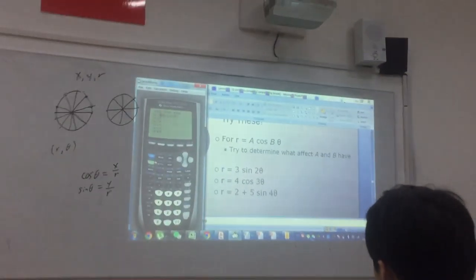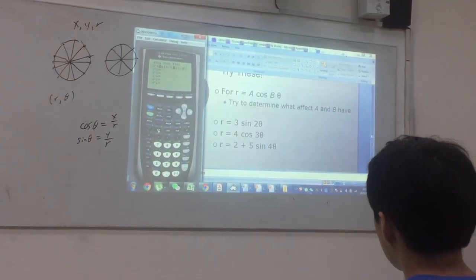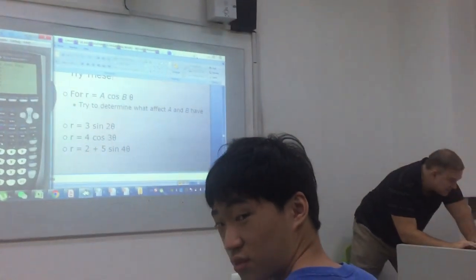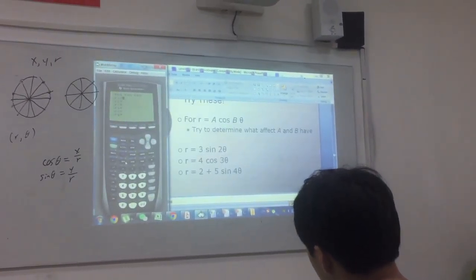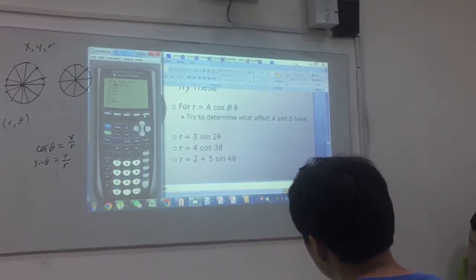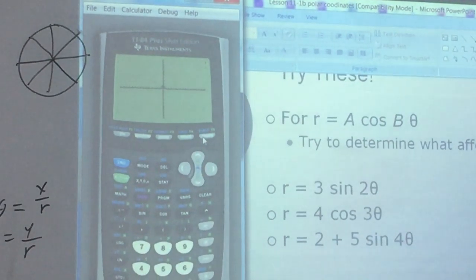Okay, so watch what I'm going to do. I'm just going to type in just sine of theta for now. So sine of... Let me clear that. Sine of theta. Now, since I already did my zoom square thing, I don't need to do that again. I can just go ahead and graph.